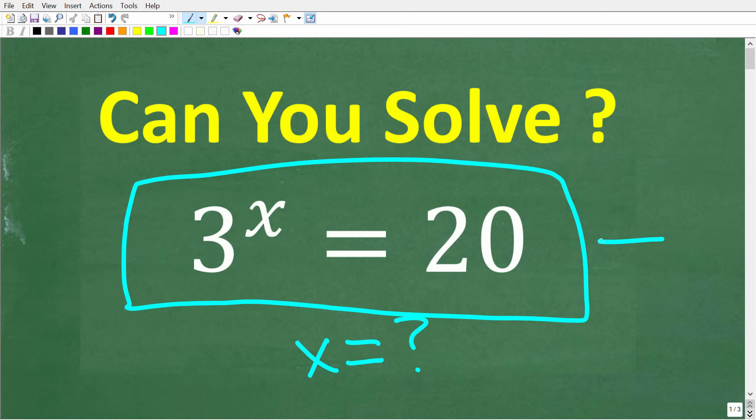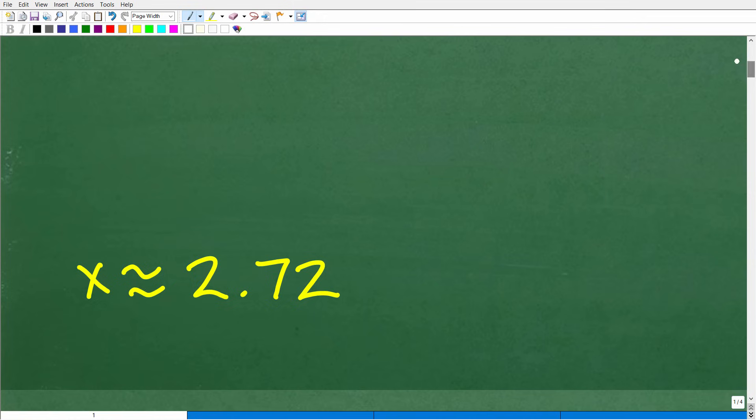Now, again, if you don't know exactly what to do here, don't give up so easily. Try to get as close as possible to the correct answer. But what is the answer to this equation 3 to the x is equal to 20? Let's go take a look at the solution.